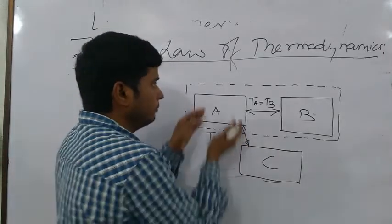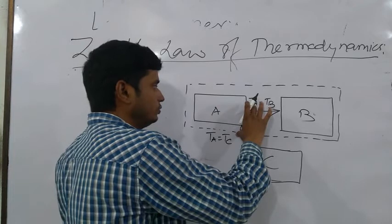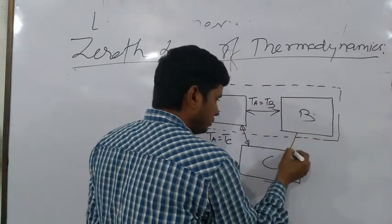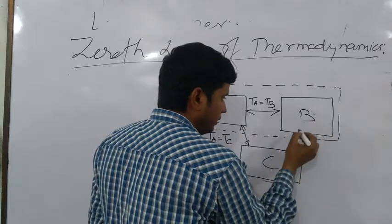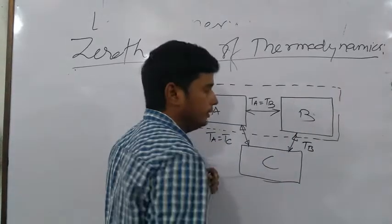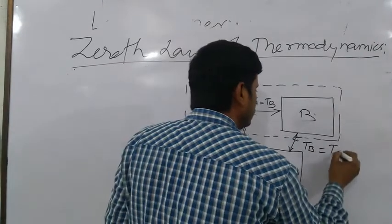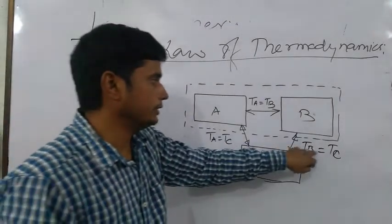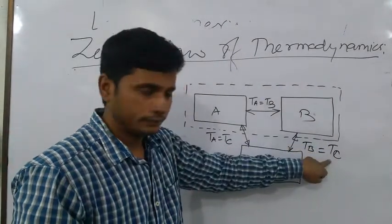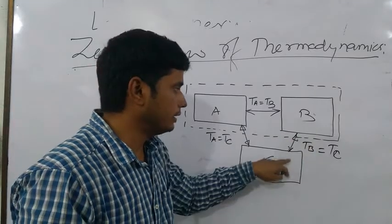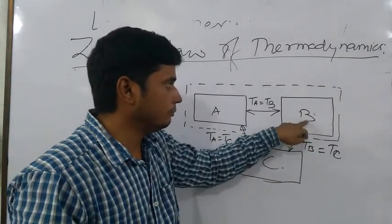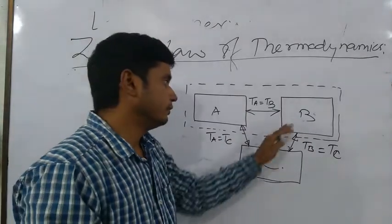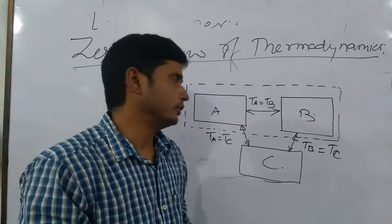Then from the Zeroth law of thermodynamics, from these two conditions, we can say that body B — that is, the temperature of B — must also be equal to the temperature of body C. This means body B is also in thermal equilibrium with body C. This is all about the Zeroth law of thermodynamics.